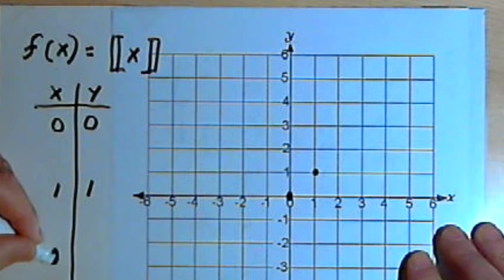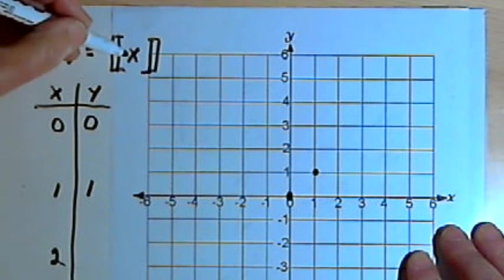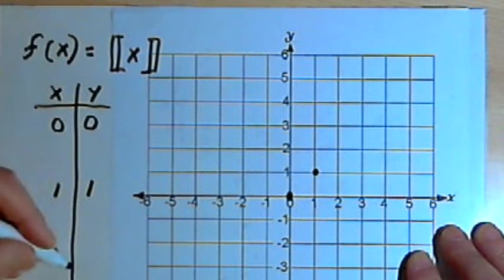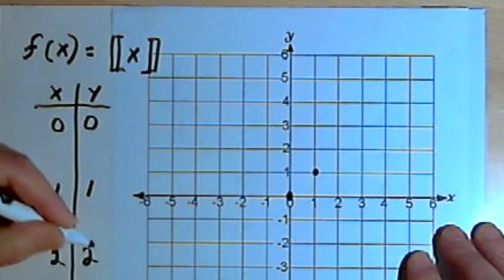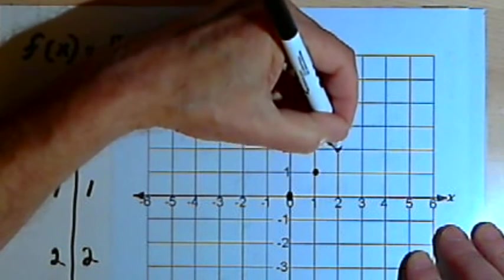And the same thing would happen if I jump down to 2. The greatest integer value of 2 is also 2. So I'll have a dot here at (2,2).